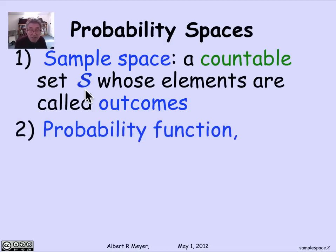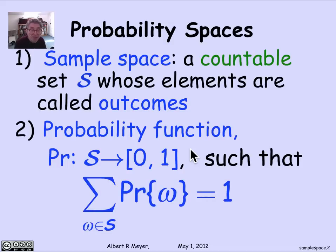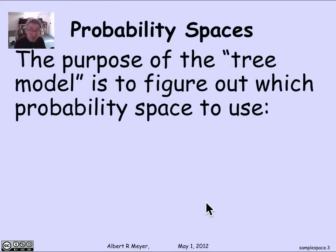The next thing is a probability function whose task is to assign probabilities to the outcomes. The probability function Pr assigns to every element in S — every outcome — a probability between 0 and 1 inclusive. The constraint on the probability function is that if you sum up the probabilities of all the outcomes omega in the sample space S, they have to sum to 1.